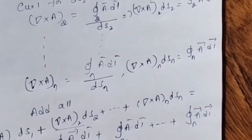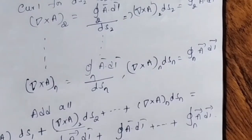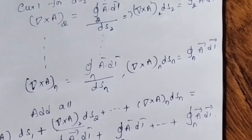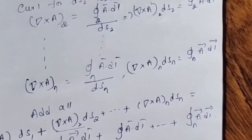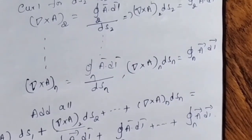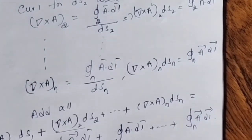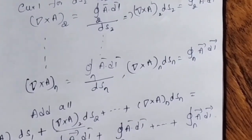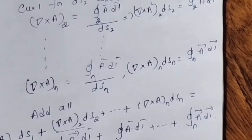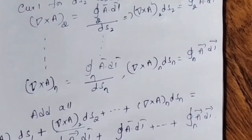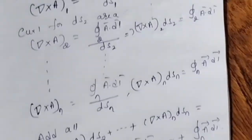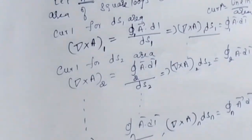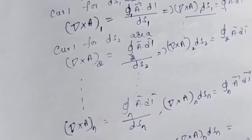If we add all these, the LHS comes as surface integral of del cross A dot dS, and all the RHS terms come as the line integral of the closed curve A dot dL. So, this is Stokes theorem — it says the line integral of vector field A around a closed curve equals the surface integral of curl of A taken over the surface surrounded by the closed curve.